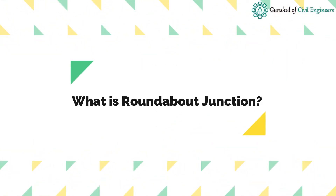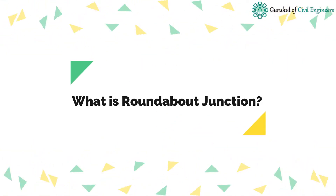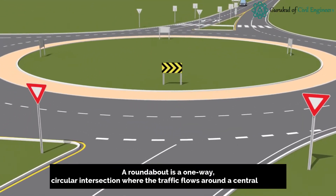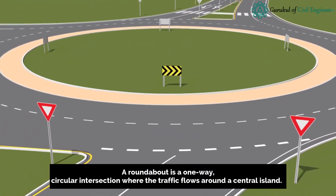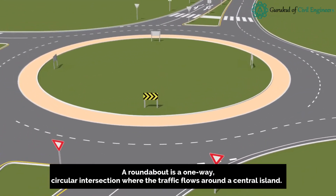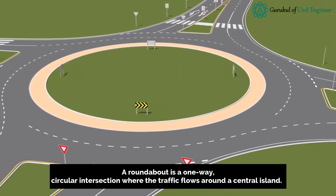What is Roundabout Junction? A roundabout is a one-way, circular intersection where the traffic flows around a central island.